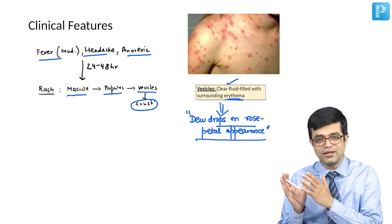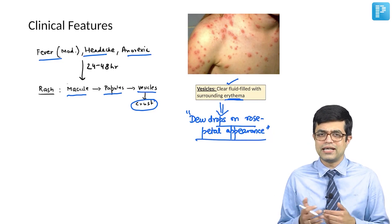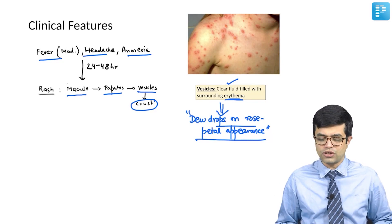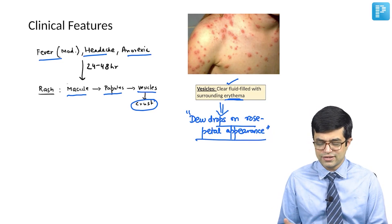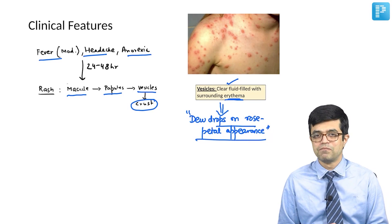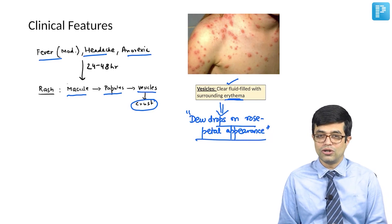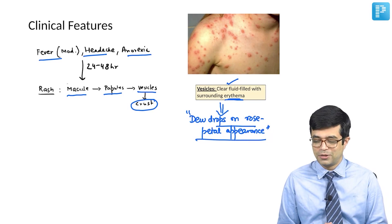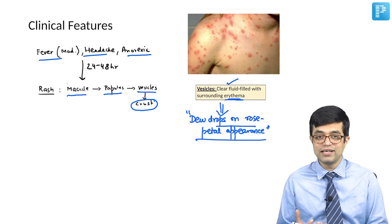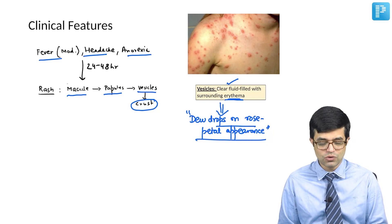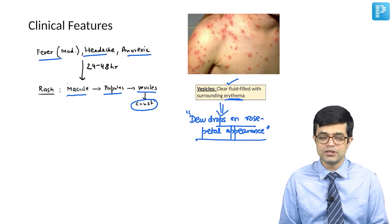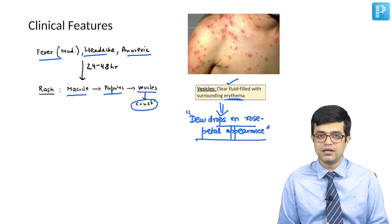This is how older physicians in the 1800s and early 1900s described the rash of varicella chickenpox — poetically as 'dew drops on rose petal appearance.' These days, descriptions are more bland, but this terminology, if you encounter it, refers to patients with chickenpox.